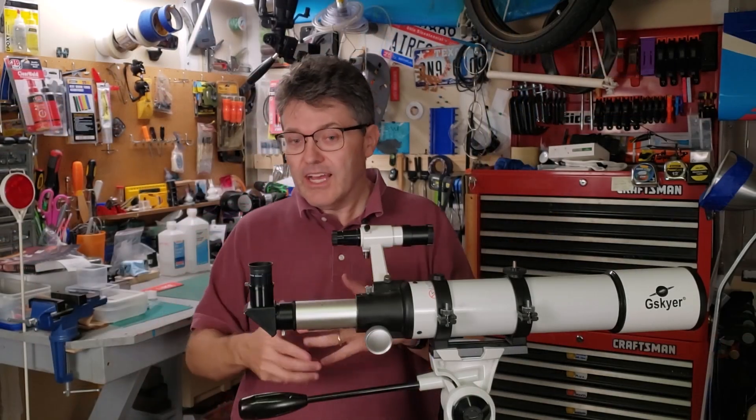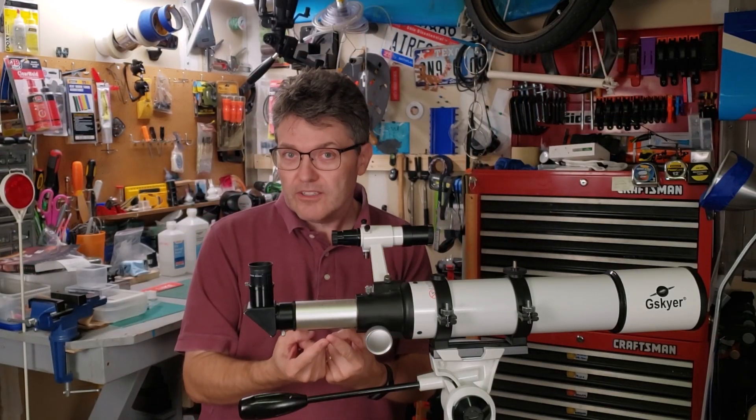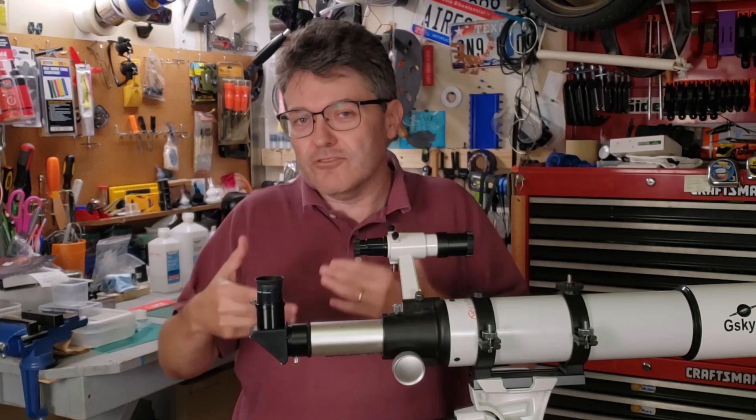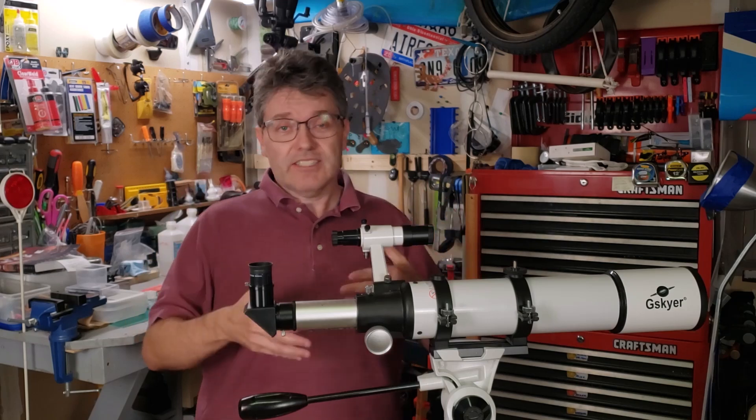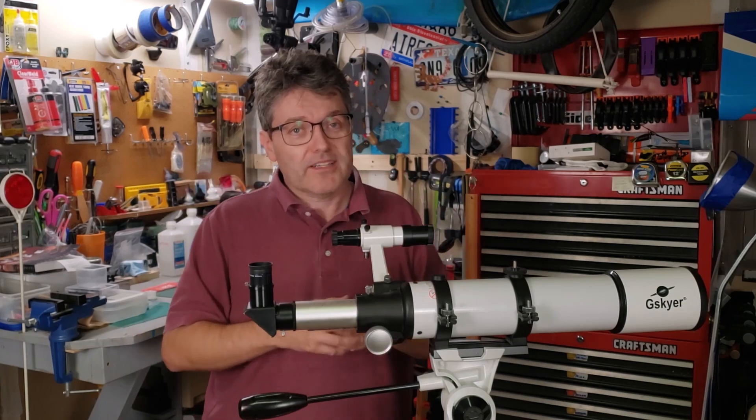Unfortunately, the gears on this rack part of the system are easily stripped, and this causes a dead spot when trying to focus. This type of damage is actually very common, and I suspect that a lot of telescopes have made their way to the landfill because of it.